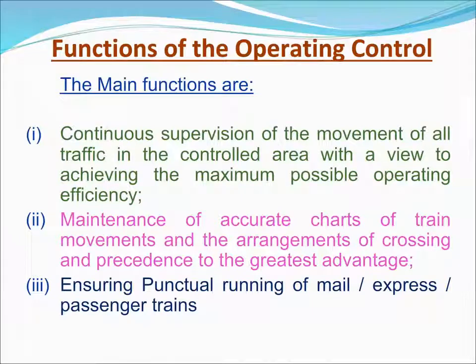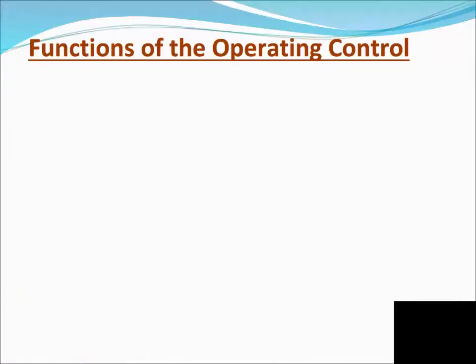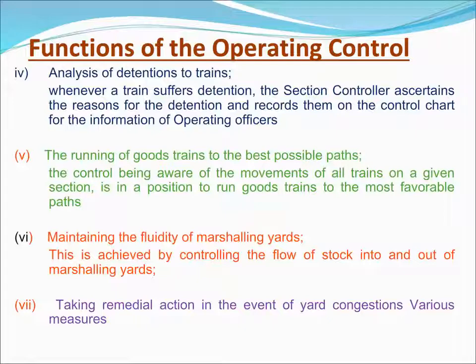The main functions of the Operating Control are: continuous supervision of the movement of all traffic in the controlled area with a view to achieving maximum possible operating efficiency; maintenance of accurate charts of train movements; arrangement of crossings and precedence to the greatest advantage; ensuring punctual running of mail, express, and passenger trains. Whenever a train suffers detention, the section controller ascertains the reason and records it on the control chart. The control, being aware of all train movements, is in a position to run goods trains to the most favourable paths.